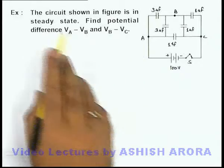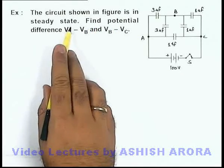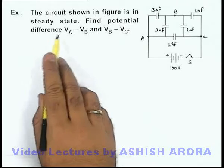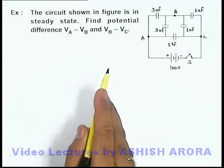In this example we are given a circuit, and in the circuit shown in figure, it is given that it is in steady state and we are required to find the potential differences V_A minus V_B and V_B minus V_C.